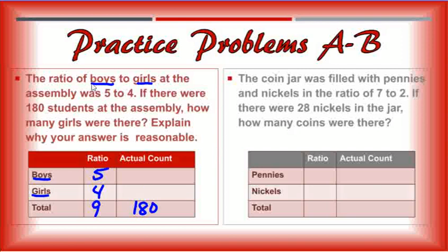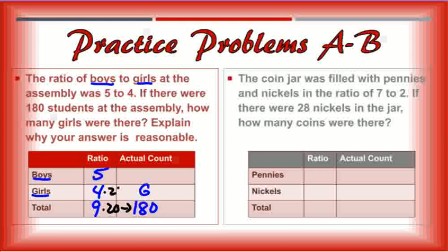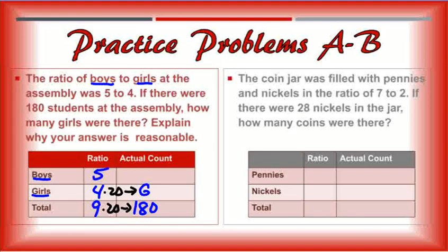How many girls were there? So I'm going to put G here for girls. I'm only looking at the bottom four. I know that 9 times 20 gives me 180. So that means I can multiply 4 times 20 to give me the number of girls, which would be 80. That would leave the number of boys to be 100.